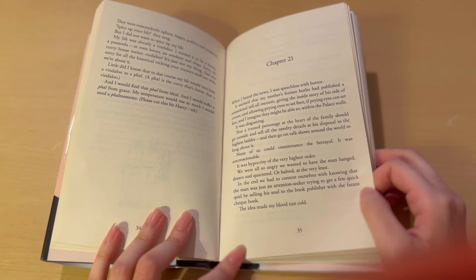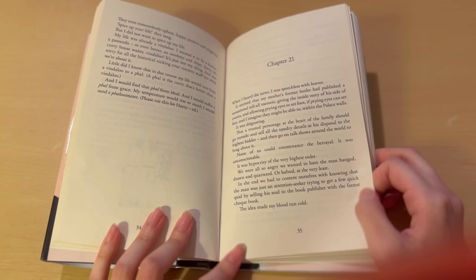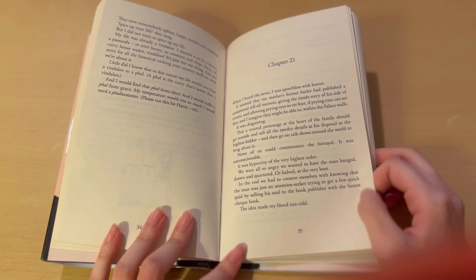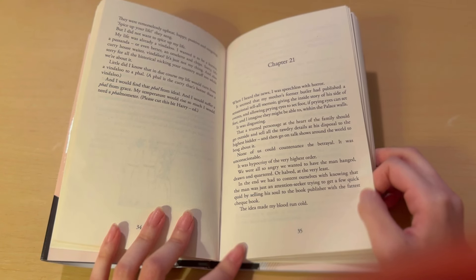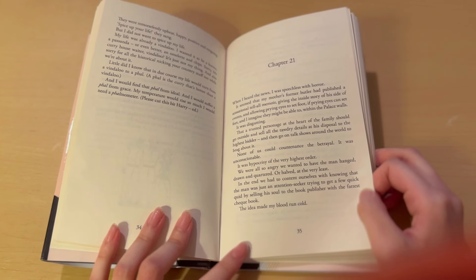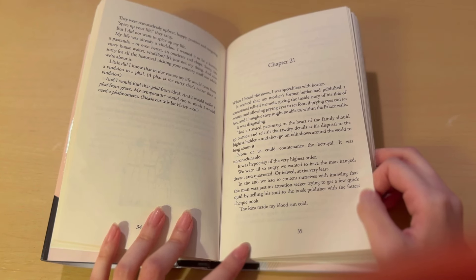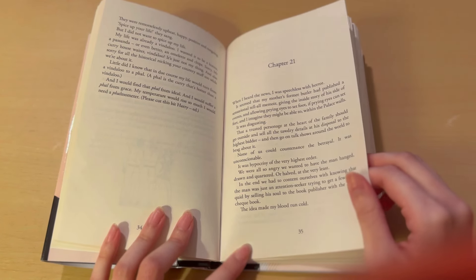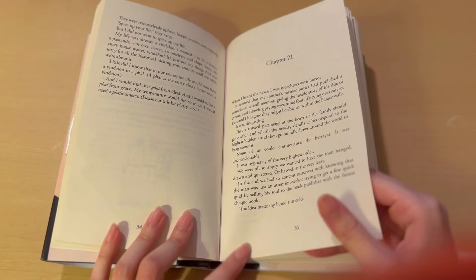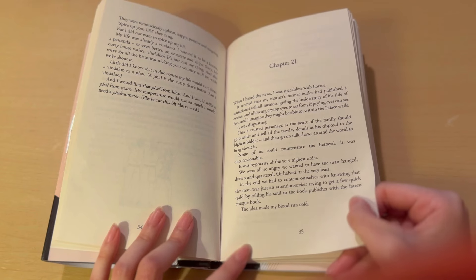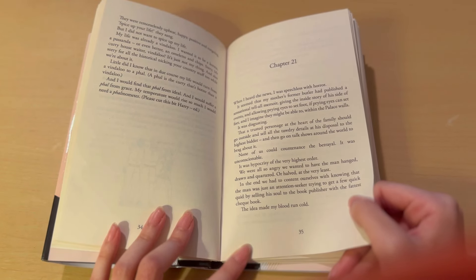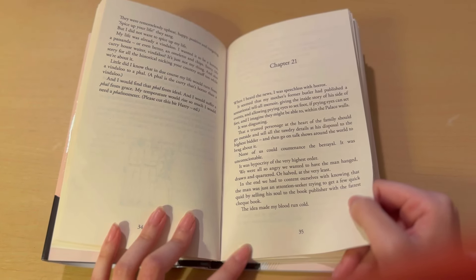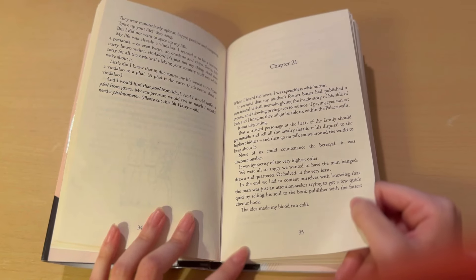That a trusted personage at the heart of the family should go outside and sell all the tawdry details at his disposal to the highest bidder, and then go on talk shows around the world to brag about it. None of us could countenance the betrayal. It was unconscionable. It was hypocrisy of the highest order. Yeah, he can look in a mirror. We were all so angry we wanted to have the man hanged, drawn, and quartered, or halved, at the very least.